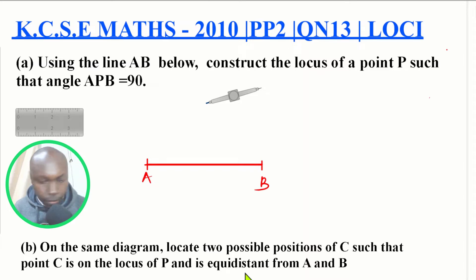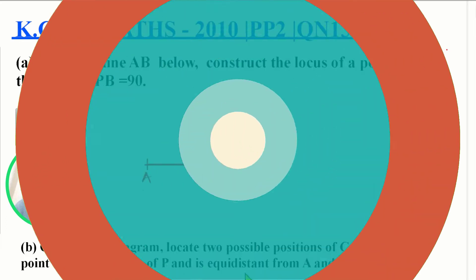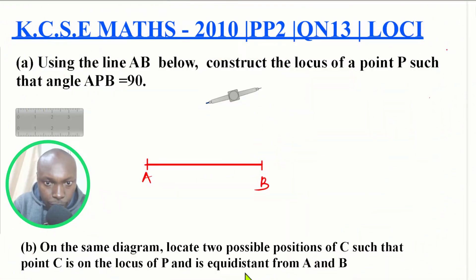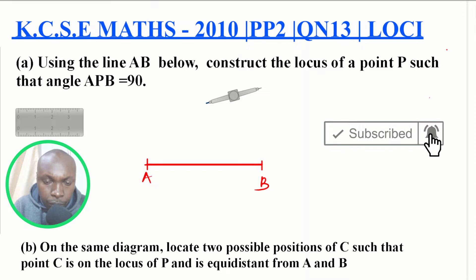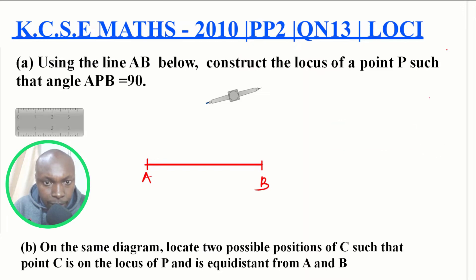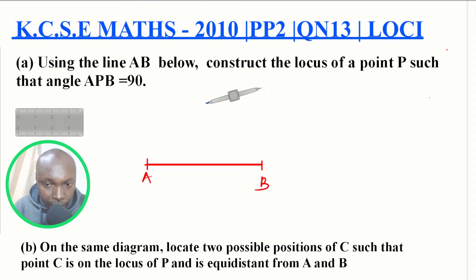So that is the question. For the first part, we are supposed to use this line to construct the locus of point P such that angle APB equals 90 degrees. To solve this, we need to recall the property that relates to the diameter, the angle it subtends, and the circumference.